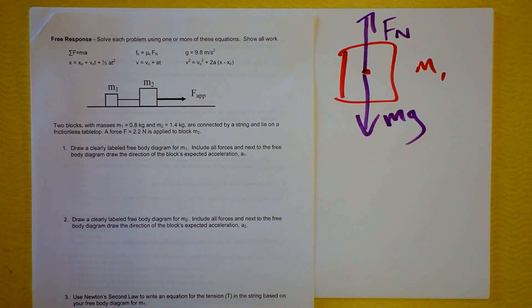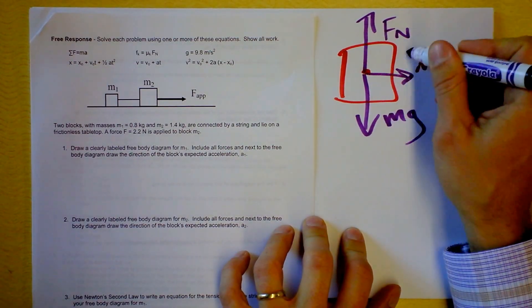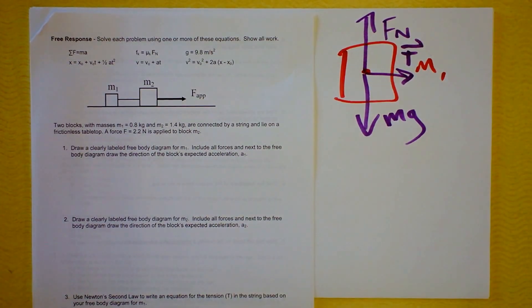There's something else acting on M1. Tension, which way? To the right. Tension to the right. We don't know how big tension is so I'm just going to label it as a capital T. That's our free body diagram for M1. We're done.